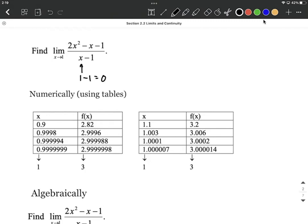But we could plug in values very close to 1. That's illustrated on the left-hand table for values just smaller than 1. Going from 0.9, replacing each one of the x values with that, that would work out to 2.82. If we get a little bit closer to 1, we could go 0.9998, replace each one of our x values in there, and you'll notice we get 2.9996.